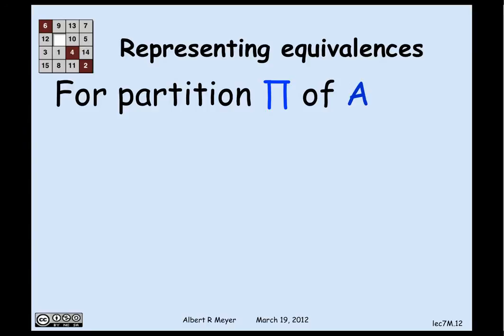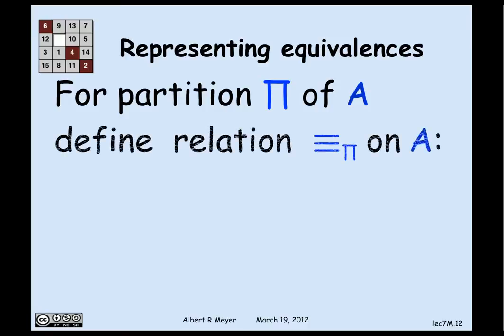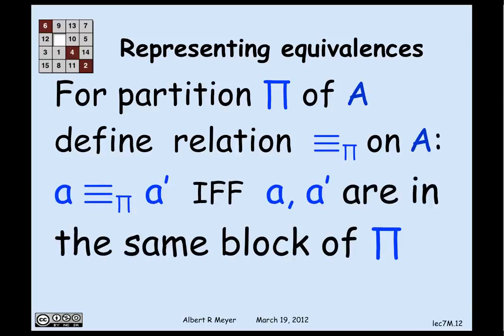Finally, whenever you have a partition of a set, you can define an equivalence relation. A partition of set A cuts it up into non-empty blocks where every element is a member of some block, and the blocks don't overlap — so every element is a member of a unique block. That enables us to define an equivalence relation on A by the property that two elements are in the same block. In fact, you can map an element to the block it's in, showing that the block representation and the equivalence of f representation are the same. The proof that every equivalence relation can be represented this way is an elementary exercise in axiomatic reasoning, left to a problem.